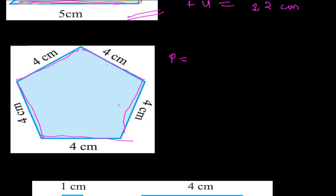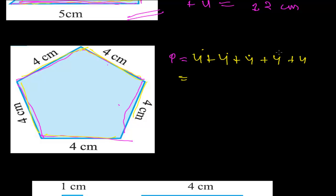Adding all sides one by one to get the perimeter: the first side is 4, the second is 4, the third is 4, the fourth is 4, and the fifth is also 4 centimeters. So 4 plus 4 is 8, plus 4 is 12, plus 4 is 16, plus 4 is 20. So 20 centimeters is the perimeter of this pentagon.